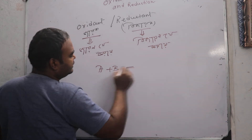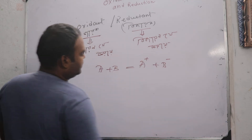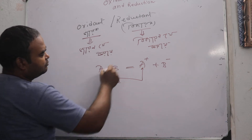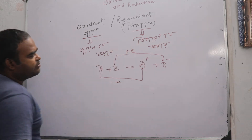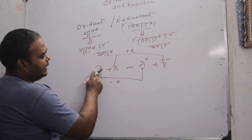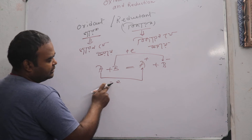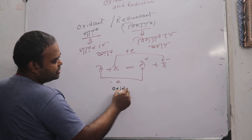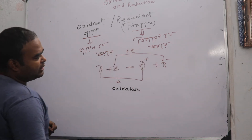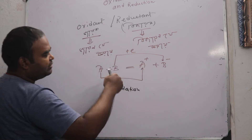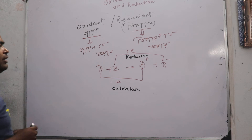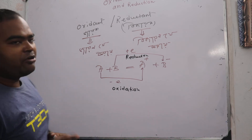Let us have a hypothetical example. A is converted to A plus, and B is converted to B minus. A is converted to A plus — that means A rejected one electron, which is a loss of electron, so this process is called an oxidation reaction. B is converted to B minus because B is accepting one electron in this process — that is a gain of electron by B — so this process is called reduction.